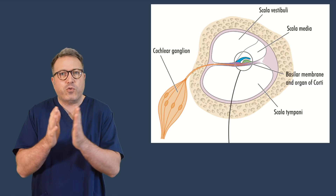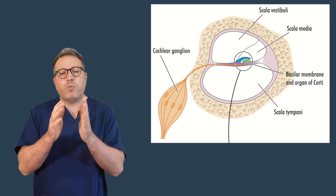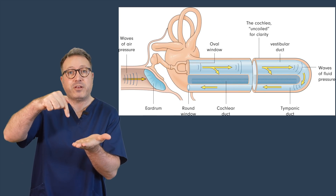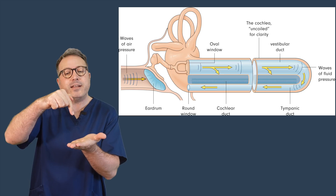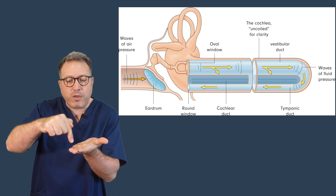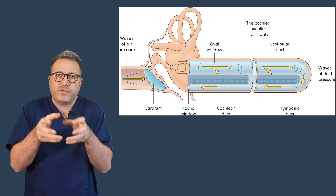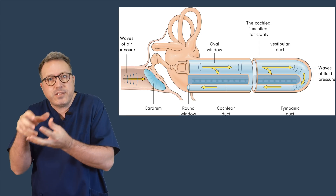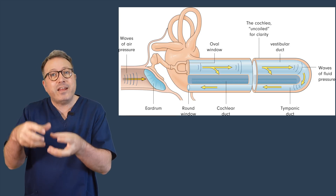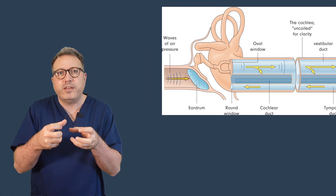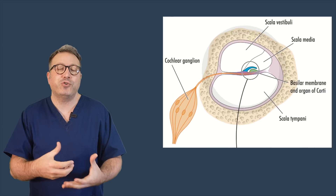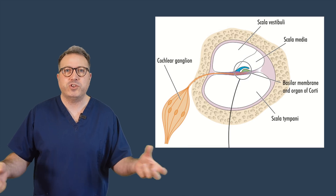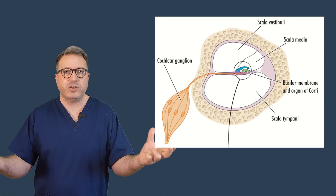When the oval window is pushed back and forth — it opens to the scala vestibuli — it creates a vibration in the perilymph which travels all the way up the snail shell structure to the very top, what they call the apex. As it comes down it passes into the scala tympani and comes all the way back down to the base again. Because of this vibration happening in the perilymph, that vibration also passes through into the scala media and into the endolymph. That fluid then starts to vibrate, which passes the vibration on to a structure called the basilar membrane.